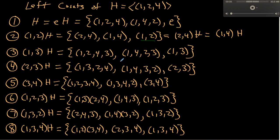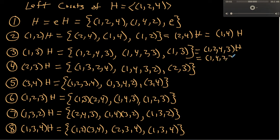The second coset could also be labeled (1→2→4→3)H or (1→4→2→3)H. You can do that with all of the other 8 left cosets as well. It's worth stopping the video and checking your work to make sure you have all 8 cosets correctly.